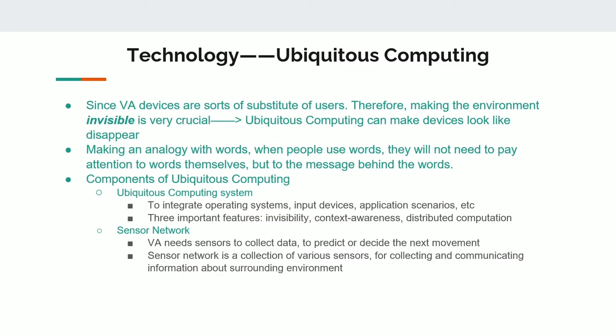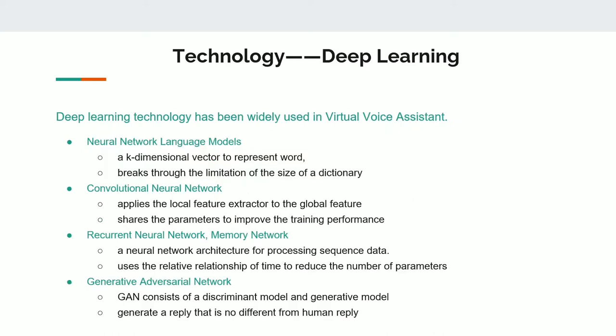Deep learning is a branch of machine learning. The deep learning algorithm is a kind of algorithm that attempts to use a multi-layer computing model or complex structure composed of multiple non-linear transformations or high-level abstractions of data. At present, deep learning technology has been widely used in virtual voice assistants.